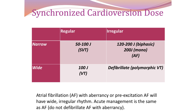For irregular rhythms, arrhythmia is more difficult to manage. In atrial fibrillation, use a higher energy level: start with 120 to 200 joules for a biphasic machine or 200 joules for a monophasic machine. For wide irregular rhythm such as polymorphic VT, we no longer give synchronized cardioversion — we defibrillate, meaning we do not press the synchronized button on the machine.